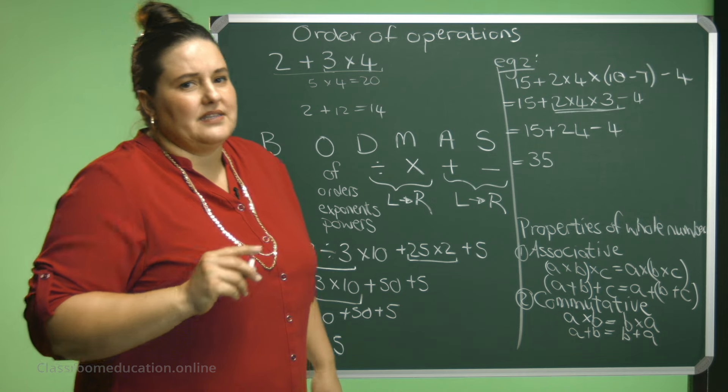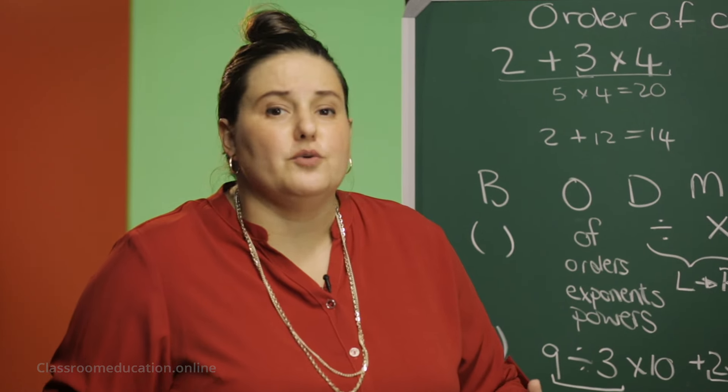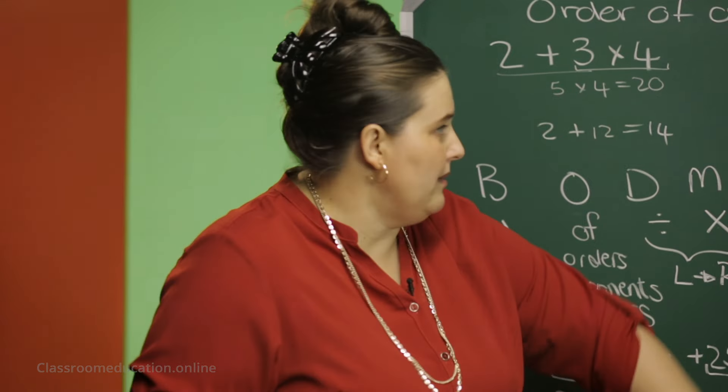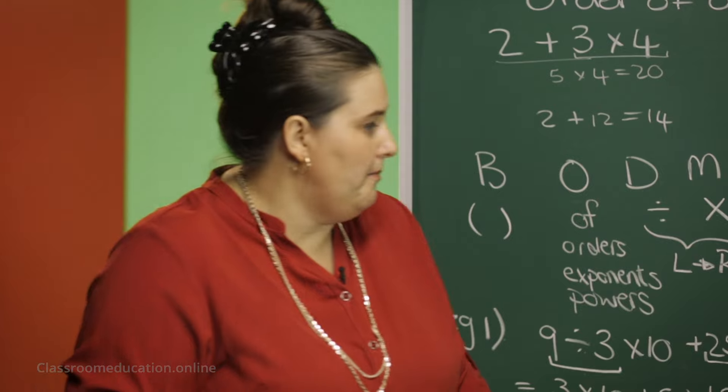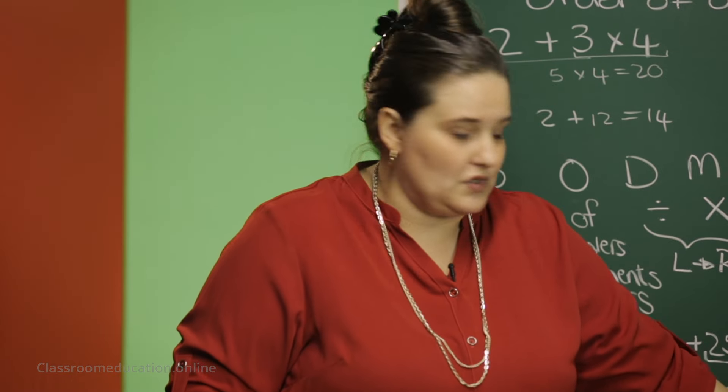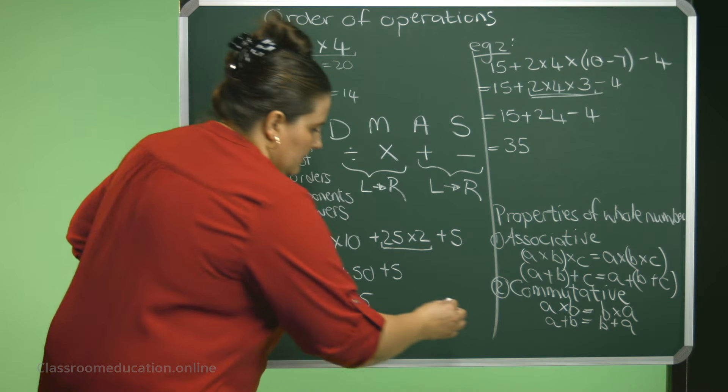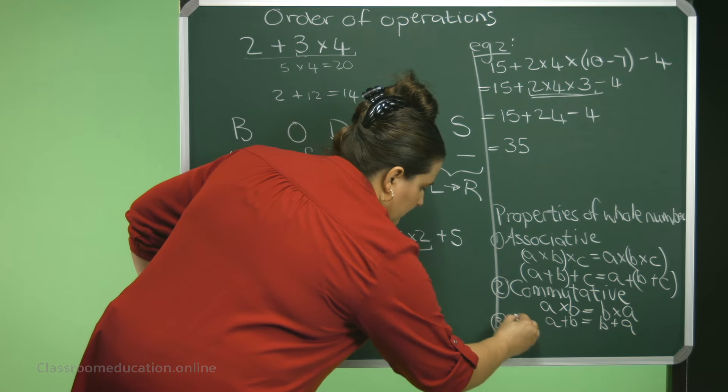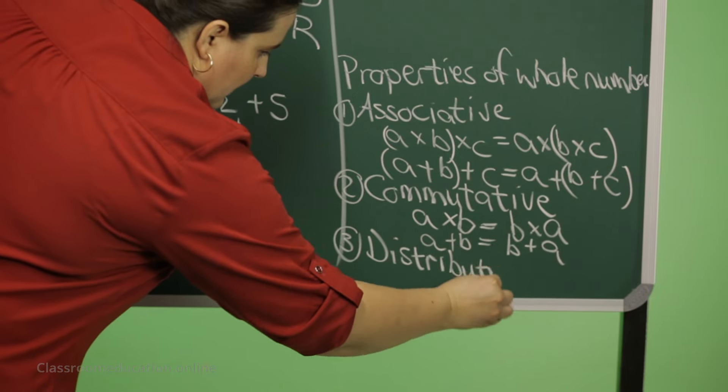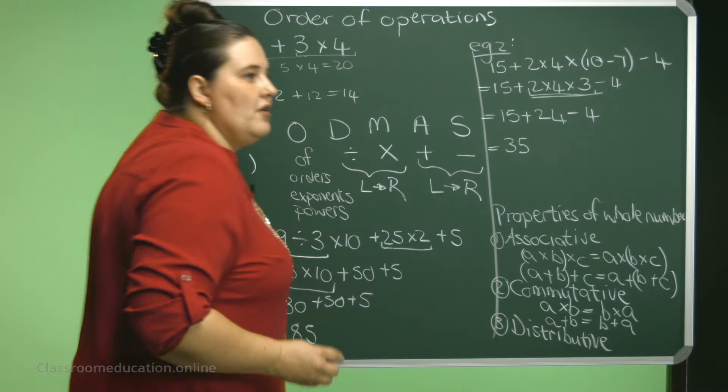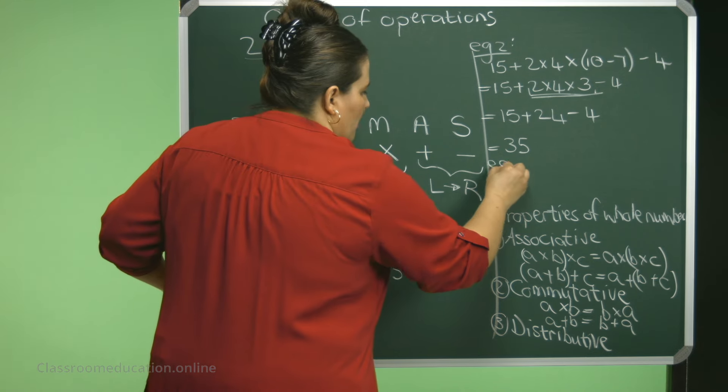Then the third property. That's very important. And that is also what you need to use when you are doing your calculations. Remember, we need to do our order of operations, but then we can also apply our properties of whole numbers. The last property is the distributive property.